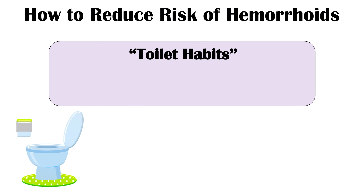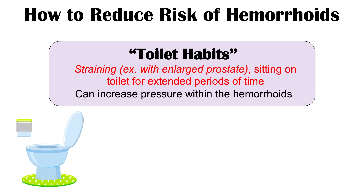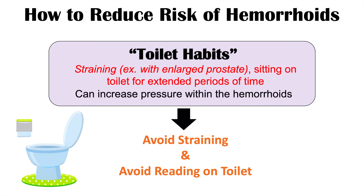Along with straining, poor toilet habits are a risk factor for worsening hemorrhoids. Straining during a bowel movement, or straining when urinating in a man with an enlarged prostate, can cause increased pressure in the system. Additionally, sitting on the toilet for extended periods of time can increase pressure within those hemorrhoids. So it's important to avoid straining and avoid reading on the toilet, as this can worsen symptoms of hemorrhoidal disease.